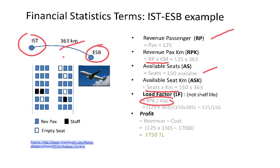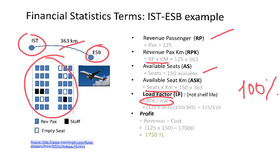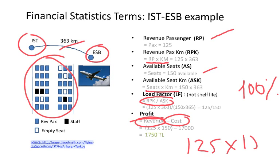The load factor measures how full the aircraft is. If it is completely full, the load factor is 100%. In our example it is 125 over 150, so it will be a bit less than 100%. Finally, profit is calculated as total revenue minus total cost. Here we multiply 125 paying passengers by 150 Lira, then subtract 17,000, which gives us a positive number — the airline is making a profit of 1,750 Turkish Lira on this particular flight.